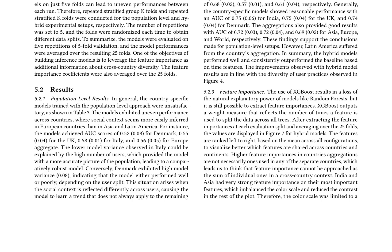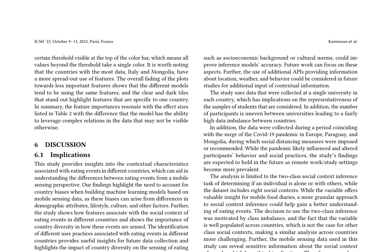The feature importance analysis reveals that different features are utilized across countries and continents, highlighting the diversity of user practices associated with eating events. The study highlights the need to account for country biases and diversity when building machine learning models based on mobile sensing data. The results demonstrate that geographical proximity cannot be used as a proxy for similar user behaviors, and that social context differs greatly across users, even within the same country.